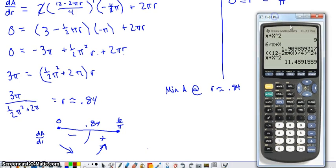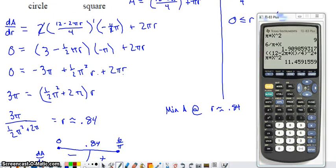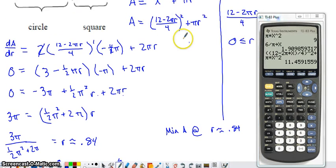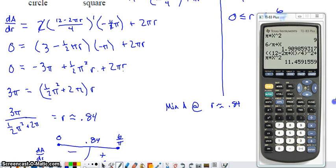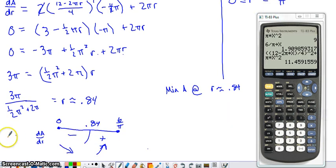What I did on my calculator there was I evaluated my area formula. So not my derivative but my area formula. And I used the one that just depended on r. I evaluated that at a radius of 0 and I got 9 square inches for the total enclosed area.